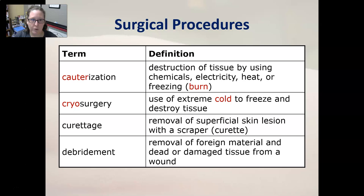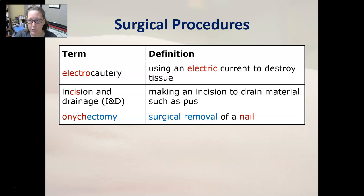Electrocautery is using an electric current to destroy tissue. Incision and drainage, also known as I&D, is making an incision to drain material such as pus — for example, on a boil, to open it up so it can empty and heal from the inside out. Onychectomy is the surgical removal of a nail.